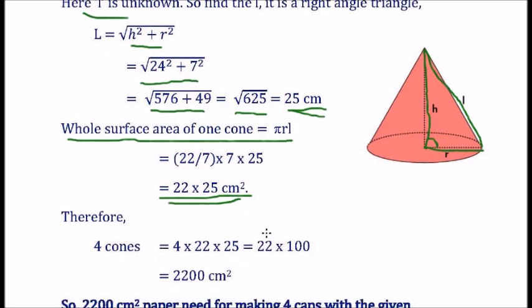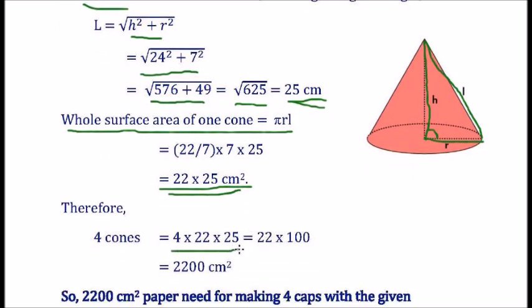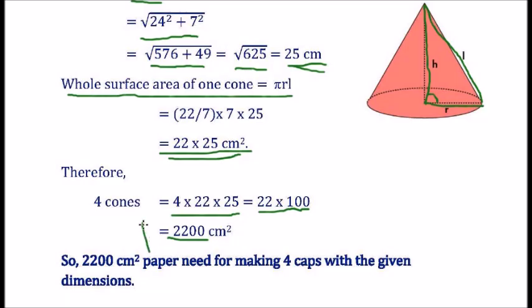So, therefore, 4 cones is equal to 4 × 22 × 25. That is equal to 22 × 100. That is 2200 cm square. So, 2200 cm square paper need for making 4 caps with the given dimensions.